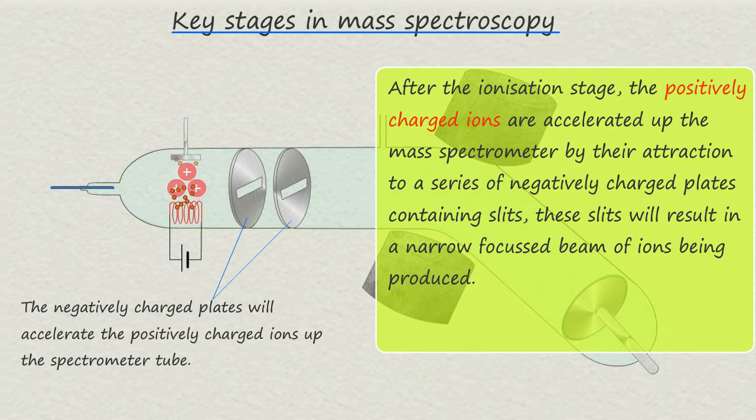After the ionization step the positively charged ions are now accelerated up the mass spectrometer by being attracted to a series of negatively charged plates.